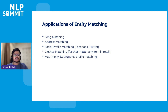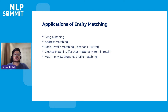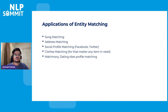Next are applications of entity matching. You can represent an address with a bunch of attributes for address matching. You can represent people on social media from Facebook, Twitter, or Instagram and verify whether they are the same person. You can do clothes matching or any retail item — like any product from Amazon — for entity matching. You can also use it for matrimony or dating site profile matching, finding potential partners based on attributes. In this world, if you can represent anything with attributes, entity matching can be applied to it. The applications are limited only to your imagination.